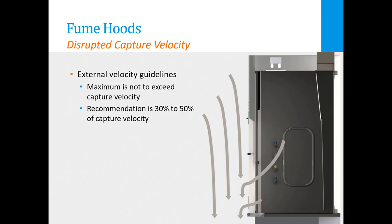The capture velocity can be affected by external air motion either from movement of occupants in the room or those working in the hoods. This disruption of capture velocity can result in air and contaminants escaping the hood. Air motion in front of the hood should never exceed the capture velocity and generally should be less than 50 feet per minute. It is recommended that the velocities in front of the hood are designed to be 30 to 50 percent of the capture velocity.